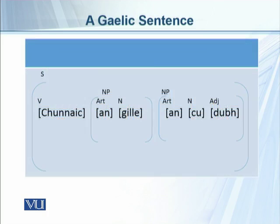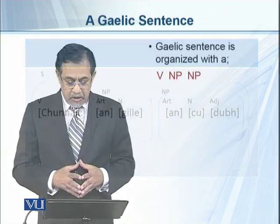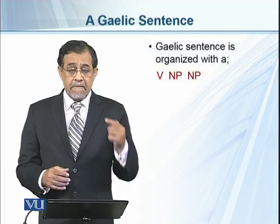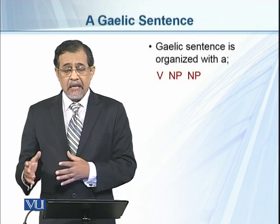If we use the same diagramming process, we get 'Cuneic' as the verb, then a noun phrase consisting of 'an' and 'glee' — where 'an' is the article and 'glee' is the noun. Then we have another noun phrase: 'an' as article, 'q' as noun, and 'dubbe' as the adjective. So this sentence in another language helps us know the structure through labeled brackets and the diagramming process.